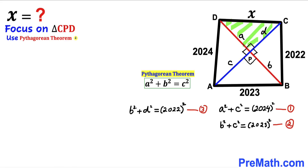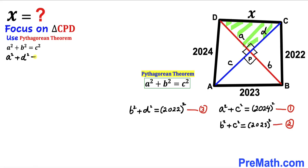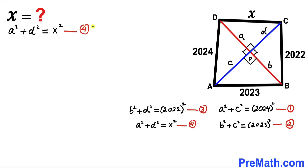Finally, let's focus on right triangle CPD. Applying the Pythagorean theorem, the hypotenuse is x and the two legs are a and d. So we get a² + d² = x². I'll label this equation number four.